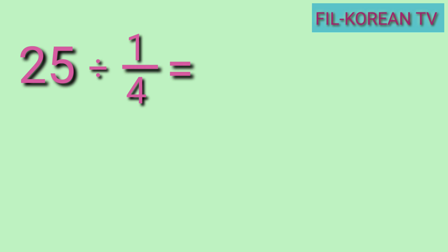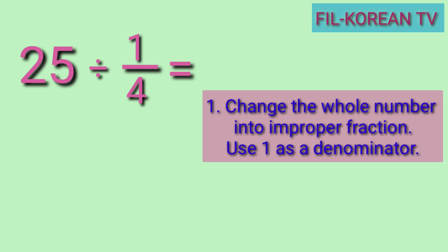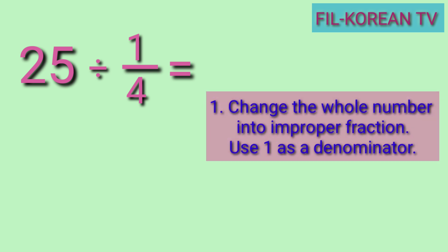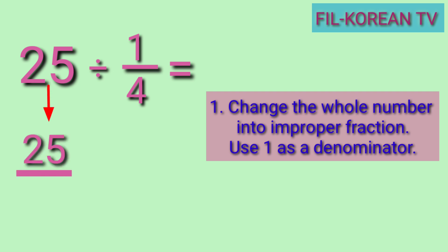Okay, first step: change the whole number into an improper fraction. Use one as a denominator. So, 25 will be the numerator and 1 is the denominator.